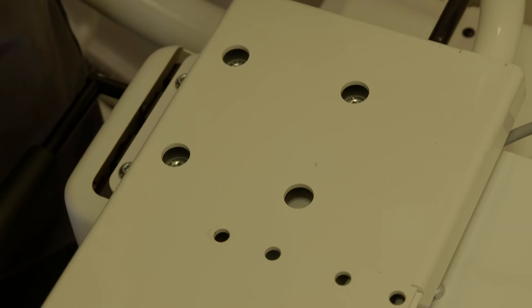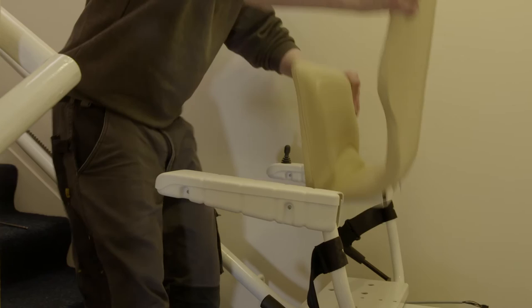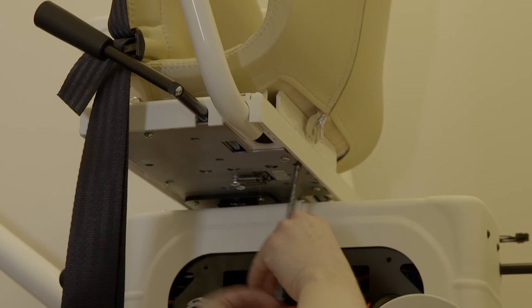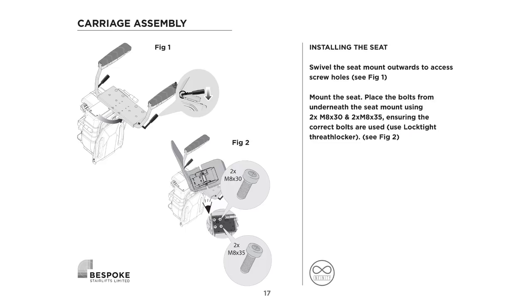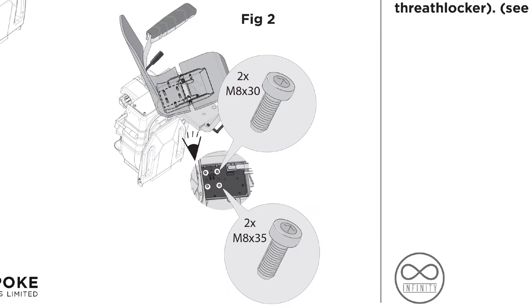Now rotate the seat mount outwards for access to the screw holes underneath. Place the seat in position and fasten using two M8 by 30 and two M8 by 35. It is important to consult your installation manual to make sure the correct screws are in the correct location, again using Loctite on each thread.